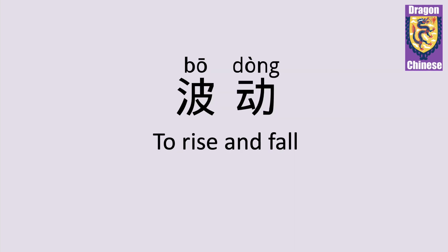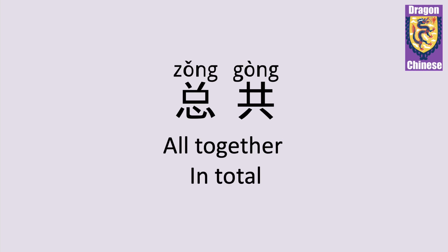波动 — to rise and fall. 总共 — all together, in total.